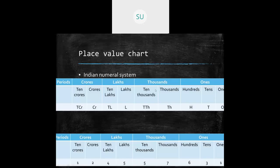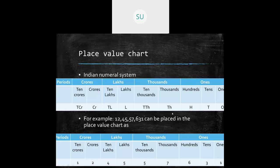We studied the Indian numeral system using a place value chart. Starting from the right, the places are: ones, tens, hundreds, thousands, ten thousands, lakhs, ten lakhs, crores, and ten crores. Ten crores is the highest place value and ones is the lowest. Here is an example: the number 12,45,57,631.